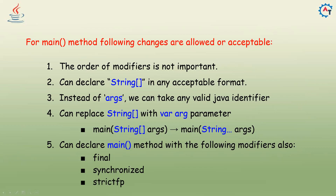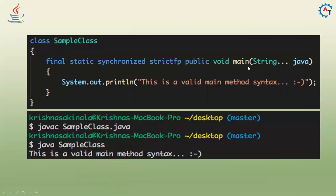You can replace String[] with a vararg parameter — writing 'String... args' instead of 'String[] args' is also valid. Additionally, you can declare the main method with extra modifiers like final, synchronized, and strictfp. For example: 'final static synchronized strictfp public void main' is a valid main method syntax. If you execute it, it runs correctly.